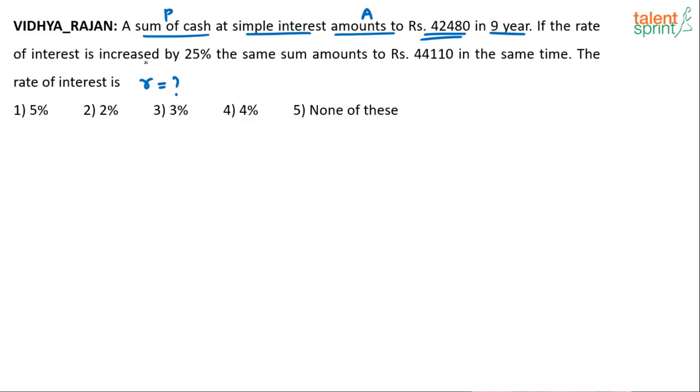If the rate of interest is increased by 25% - we have assumed that the original rate of interest is R. It is increased by 25%. Then the same sum P amounts to 44,110 in the same time, meaning the 9 years. So what is the rate of interest R? So our assumption is the rate of interest here is equal to R, R percentage per annum.